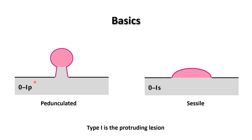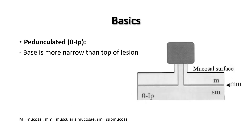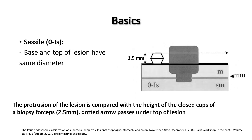Type 1 is either pedunculated — referred to by the letter P — where the neck is narrower than the head of the lesion, or sessile — referred to by the letter S — where the base and the top of the lesion are the same diameter. Both are more than 2.5 mm. If less than this, the lesion is categorized as type 2.